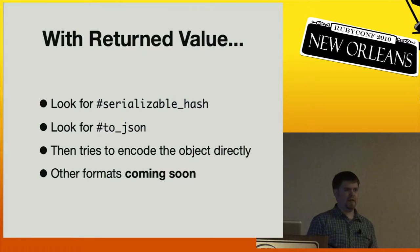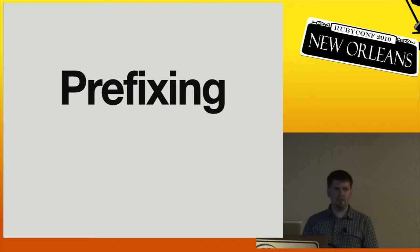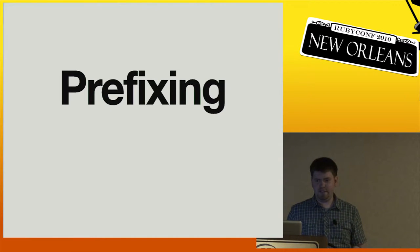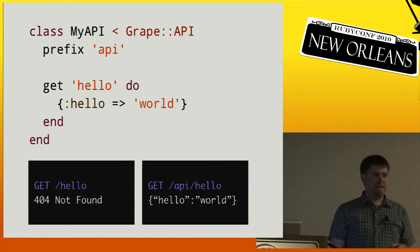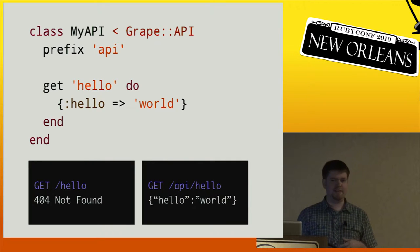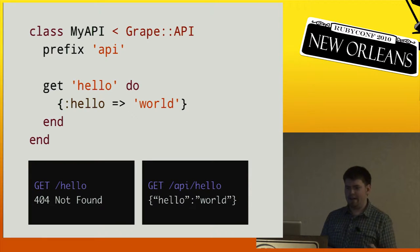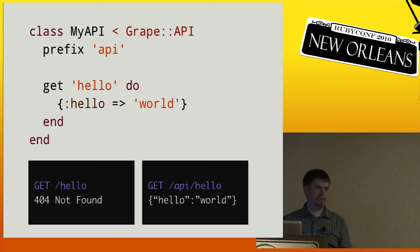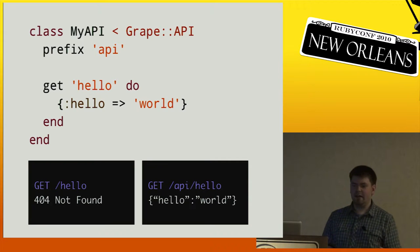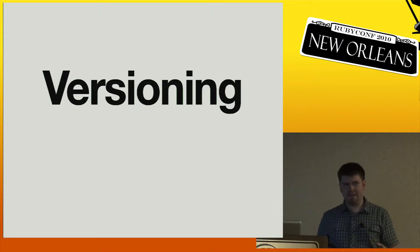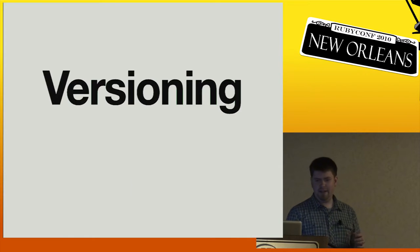You can also do prefixing really easily. If I want my API prefixed so that everything is slash API slash something, all I do is put 'prefix :api' at the top of my Grape API, and from there all requests are presumed to be prefixed.